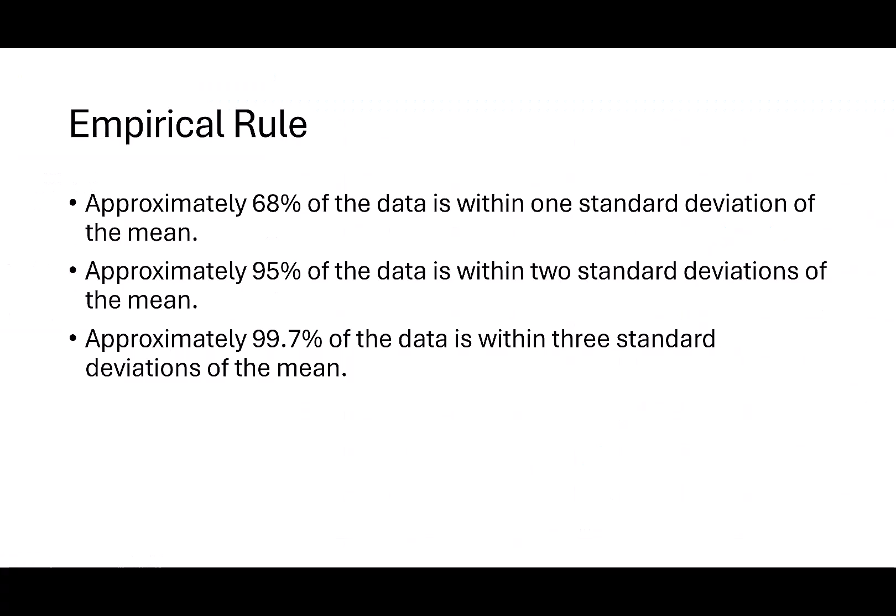All normal distributions follow the empirical rule. It says approximately 68 percent of the data is within one standard deviation of the mean. Approximately 95 percent of the data is within two standard deviations of the mean.